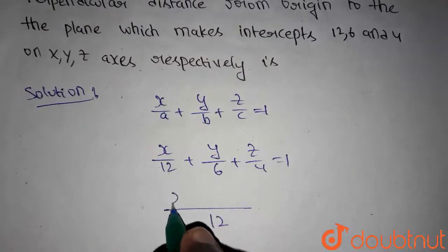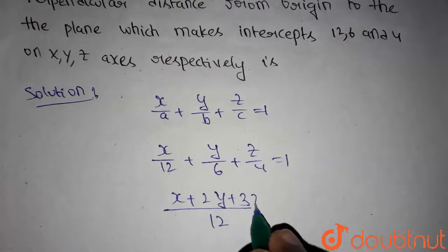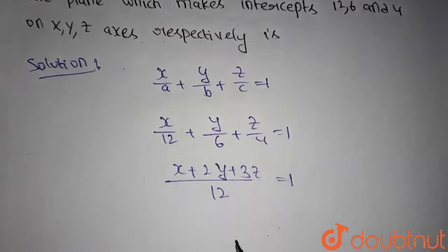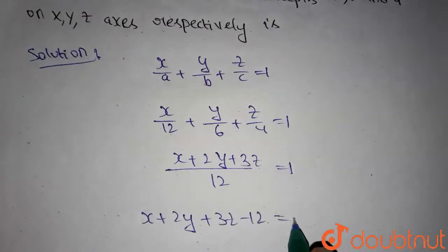So x + 2y + 3z = 12. So we get the plane equation as x + 2y + 3z - 12 = 0.